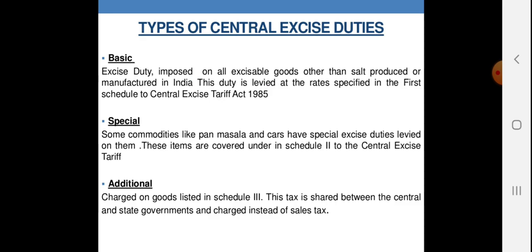Special Excise Tax यानि विशेष उत्पाद कर — some commodities like paan masala and cars have special excise duties levied on them. These items are covered under Schedule 2 of the Central Excise Tariff. सरकार का मानना है कुछ चीज़ें विलासिता की वस्तुएं हैं — जैसे पान masala, luxury cars, air conditioners, washing machine — उन पर विशेष कर आरोपित होना चाहिए। सरकार उन्हें रोकना नहीं चाहती पर उनके ख़जाने में हिस्सा लेना चाहती है।